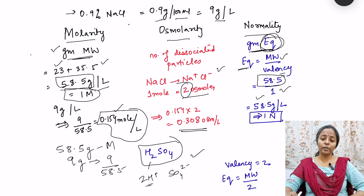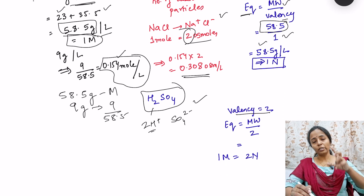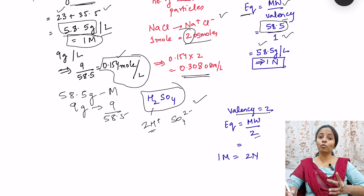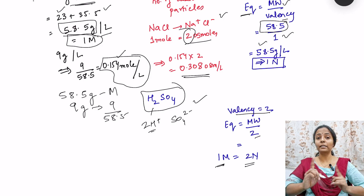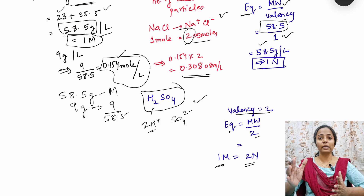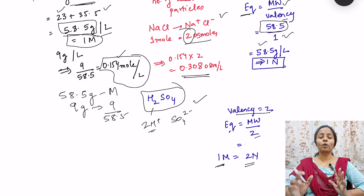For H2SO4, it is different. H2SO4 has two hydrogen ions (two positive) and SO4 with charge of minus two, so valency is two. The equivalent weight is the molecular weight divided by two — half the molecular weight. So one molarity equals two normality for H2SO4. To prepare a one normal solution of H2SO4, you dissolve half the molecular weight of the solute in one liter of solution.